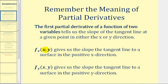More specifically, the partial derivative of f with respect to x gives us the slope of the tangent line to a surface in the positive x direction, and the partial derivative of f with respect to y gives us the slope of the tangent line to the surface in the positive y direction. But a directional derivative will tell us the slope of a tangent line in any direction.